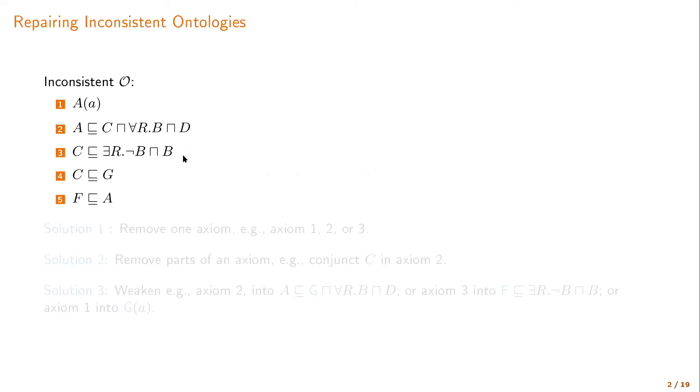So we need to repair it in some way. So what could we do? We could remove one axiom, which is bad. For example, axiom one, which says that the concept A is not empty. But this is a bit of a brutal solution, right?